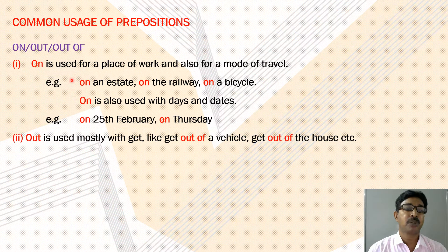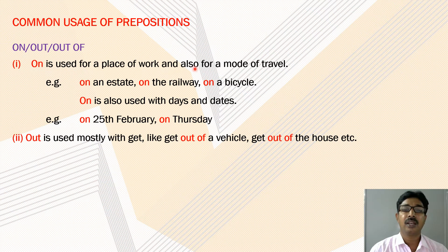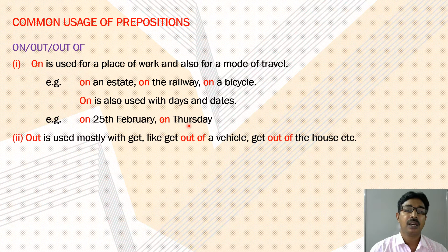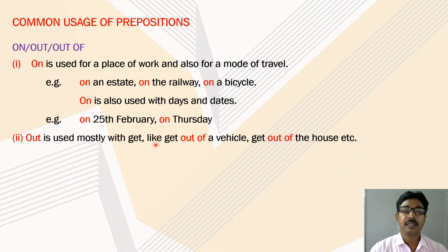'On' is used for a place of work and also for a mode of travel — for example: on an estate, on the railway, on a bicycle. 'On' is also used with days and dates — for example: on 25th February, on Thursday, etc. 'Out of' is used mostly with 'get' — like get out of a vehicle, get out of the house, etc.